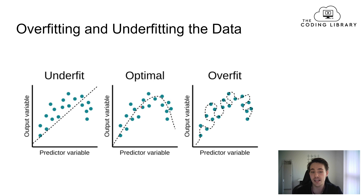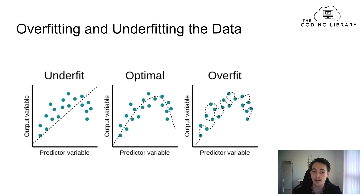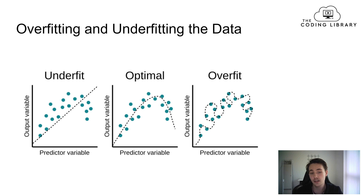In the optimal case we still get some deviation from our regression line, but we can generalize and predict new data. In the overfitting scenario on the right, our model fits so tightly to every training data point that it cannot predict new unseen data — it produces a very complex, wiggly output. For example, new prediction points would land in the wrong region of the graph. The optimal solution avoids both underfitting and overfitting so we can accurately predict new data.